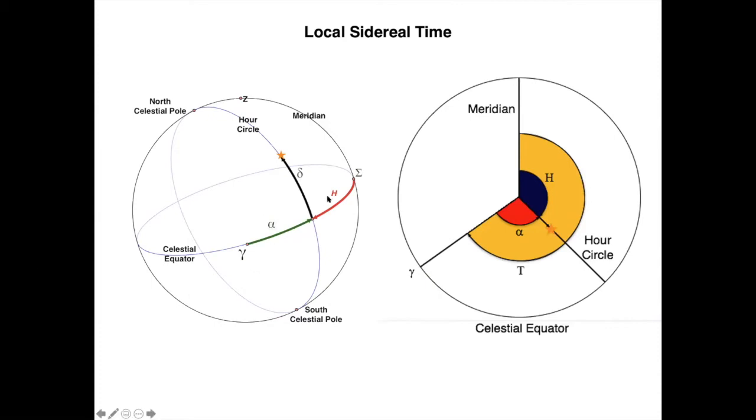You have here the coordinates in both equatorial and in the hour system. You have gamma here, the vernal point. You go from the vernal point to the hour circle of the star and that defines the right ascension. The complement of this from the hour circle to the meridian defines the hour angle. The local sidereal time is the sum of the hour angle plus the right ascension of the star.